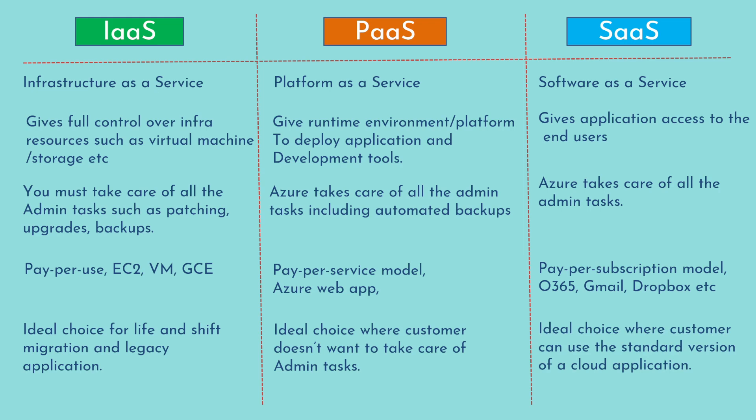SaaS is the ideal choice when you can use the standard version of a cloud application without making any customizations. For example, if you want to use a Google Workspace application such as Gmail, you just take the subscription and start using it. You do not deploy your own version of Gmail — you basically don't have access to do that. So SaaS is the choice in that case.